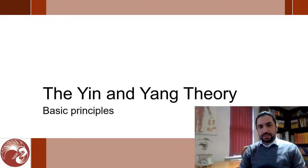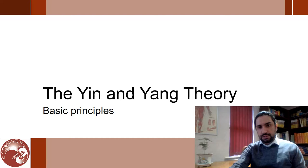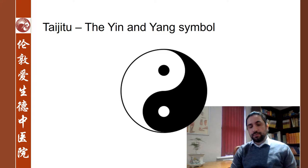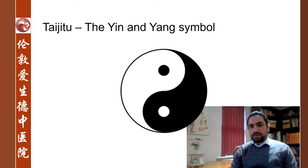The yin and yang theory is a basic theory in traditional Chinese medicine. It postulates the existence of two principles, yin and yang. Often we see this theory presented in relationship to a symbol, and this became so common that this symbol is called the yin and yang. Although it does have its own name — it's called the Taiji symbol. This symbol can be used to explain the relationships between these two principles.